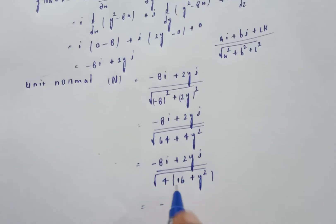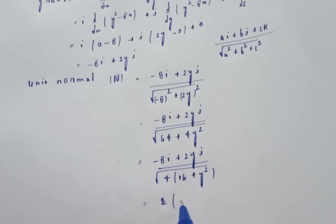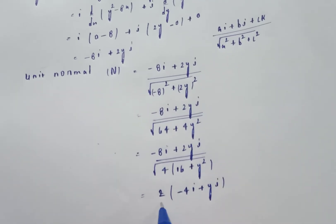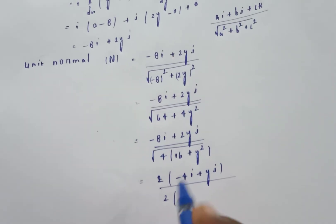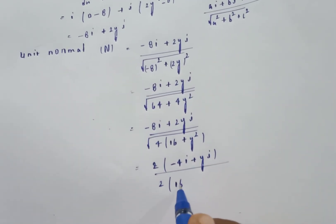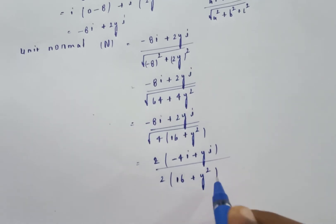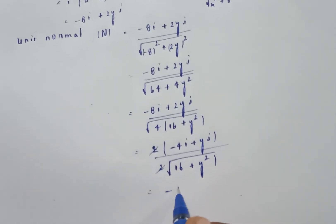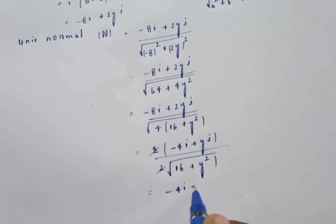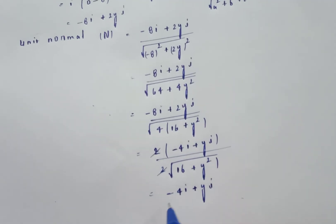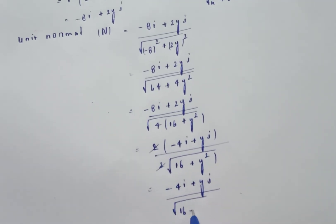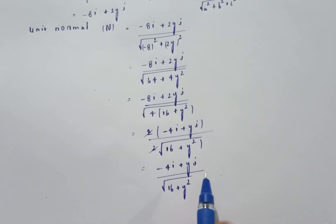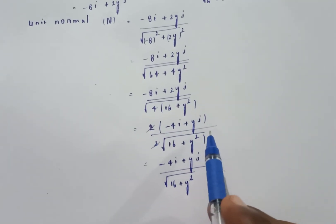Taking 2 common from numerator and denominator: unit normal n equals (-4i + yj) divided by root of (16 plus y²). So the unit normal vector is n = (-4i + yj) / √(16 + y²).